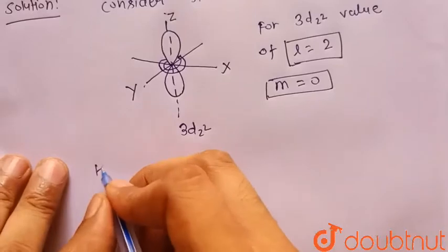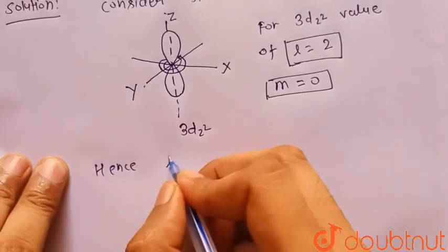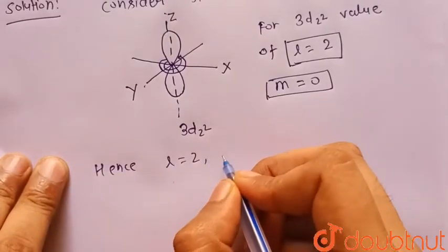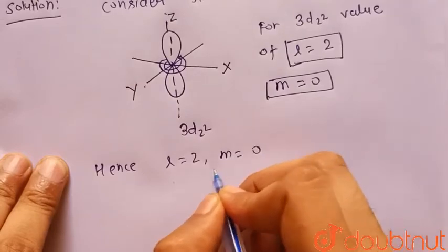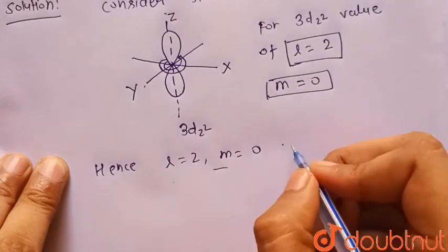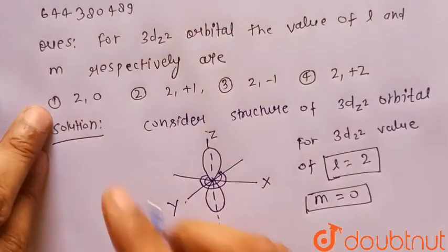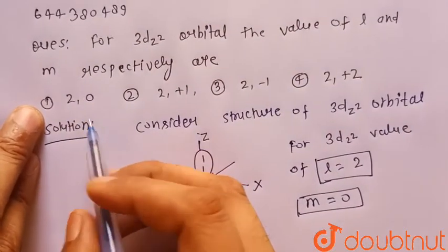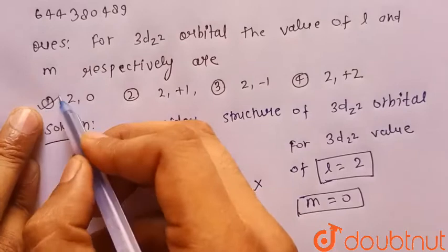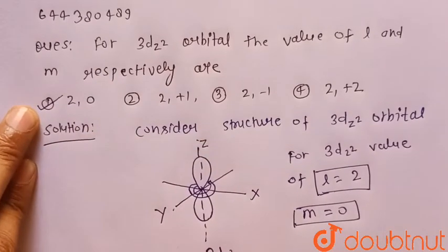Hence L is equal to 2 and M is equal to 0. So which is given in the option number first, that is 2,0. Hence option first is the correct choice. Thank you.